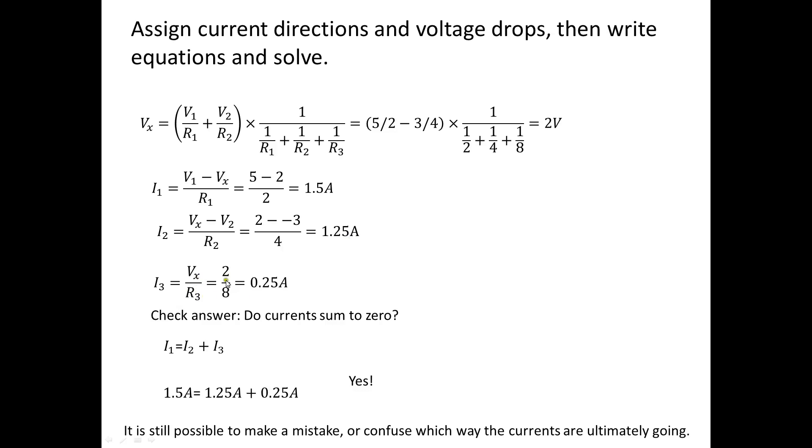And then Vx divided by R3 is 2 divided by 8 or a quarter of an amp. Now, these circuits can be sometimes unintuitive and it might be hard to tell.